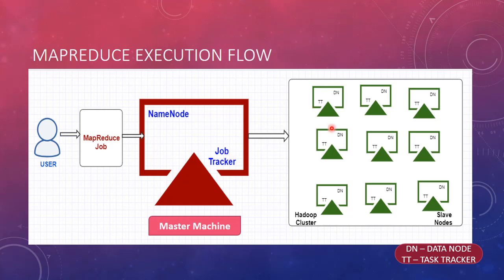The JobTracker service is a master service whereas TaskTracker is a slave service, both belonging to the MapReduce part. I assume that the data is already stored in the slave machines. Now this data I am going to process by writing a MapReduce program. The given input file is divided into four blocks and the primary replicas are stored in these four blocks. The input file or data set is distributed among these four machines using HDFS.